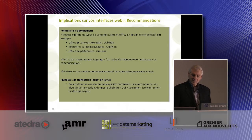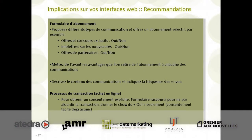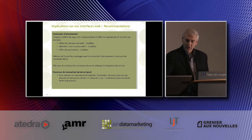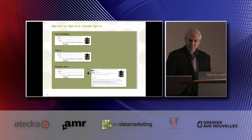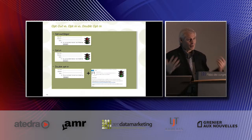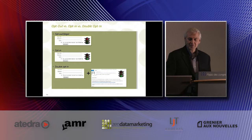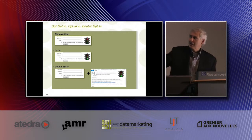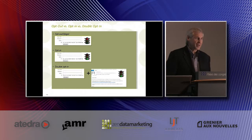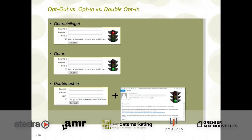Un processus de transaction à champs en ligne pour obtenir un consentement explicite : faire un formulaire accourci pour ne pas alourdir la transaction, donner le choix du « oui seulement », le consentement tacite étant déjà acquis. Si vous voulez capturer des informations de base — adresse courriel, prénom, nom — dans le premier exemple, c'est une lumière rouge à ne pas faire : c'est le opt-out. Ça n'est plus permis, c'est illégal.